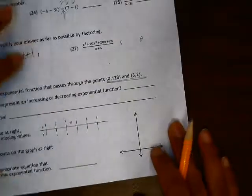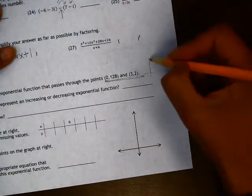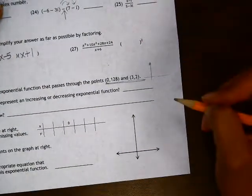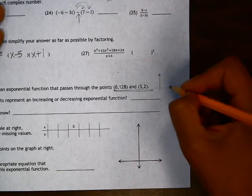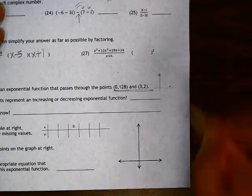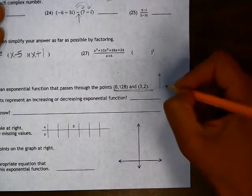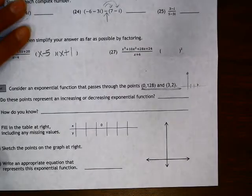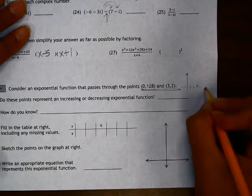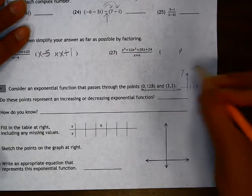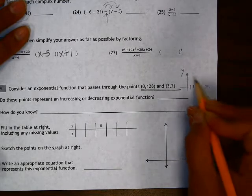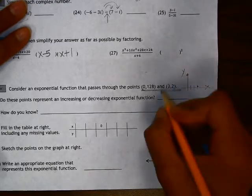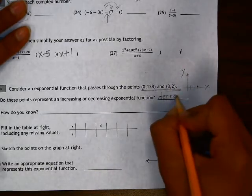Now, if we just quickly sketch this, so 0, 128, and then 3, 2 would be somewhere really far away from 128. Now, whether this is an increasing or decreasing exponential function, well, as x increases, y is decreasing. So that means this is a decreasing function.